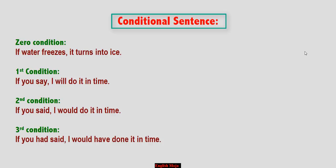The main thing about a conditional sentence is that it consists of two sentences. One sentence contains the condition — the 'if' clause — and the other sentence contains the result. When a question comes from conditional sentences, there are three types: first condition, second condition, and third condition.